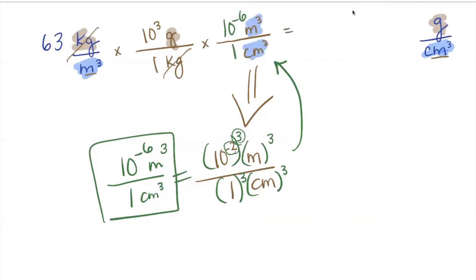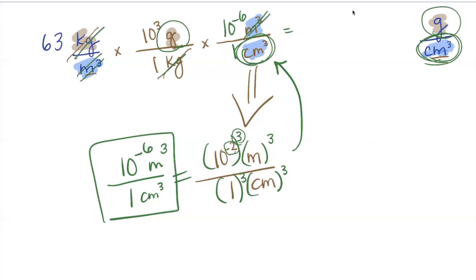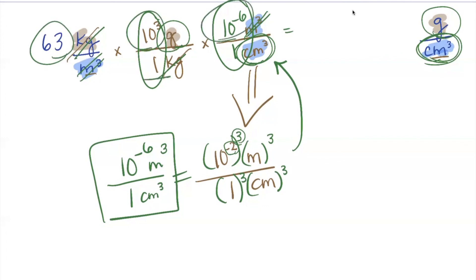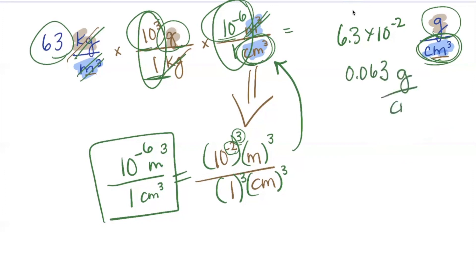Now we see our cubic meters cancel and we're left with cubic centimeters in the denominator — which is what we want — leaving us with grams per cubic centimeter. We've canceled kilograms and canceled cubic meters with the correct conversion factors. Taking 63, multiplied by 10 to the 3rd, multiplied by 10 to the negative 6, gives us 6.3 times 10 to the negative 2, or 0.063 grams per cubic centimeter. That is our final answer.